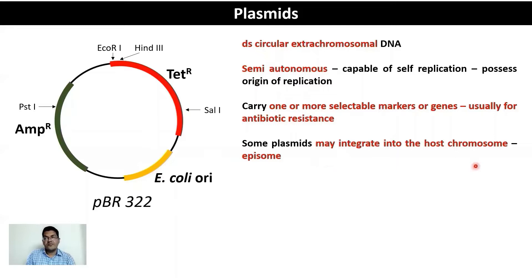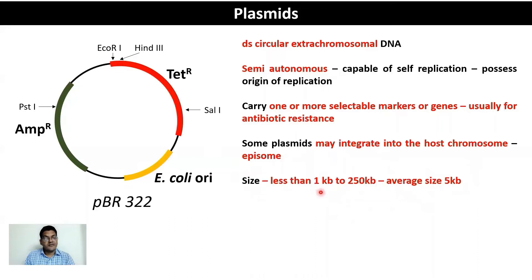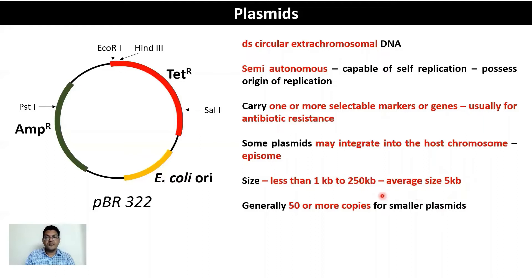Some plasmids may have the property of integrating into the host chromosome, forming episomes, though this is not common to all plasmids. The size of plasmids is highly variable — from as small as 1 kb to as large as 250 kb — but those used most commonly for cloning have an average size of about 5 kb. Most common plasmids used in recombinant technology are high copy number plasmids, with 50 or more copies present in a cell.